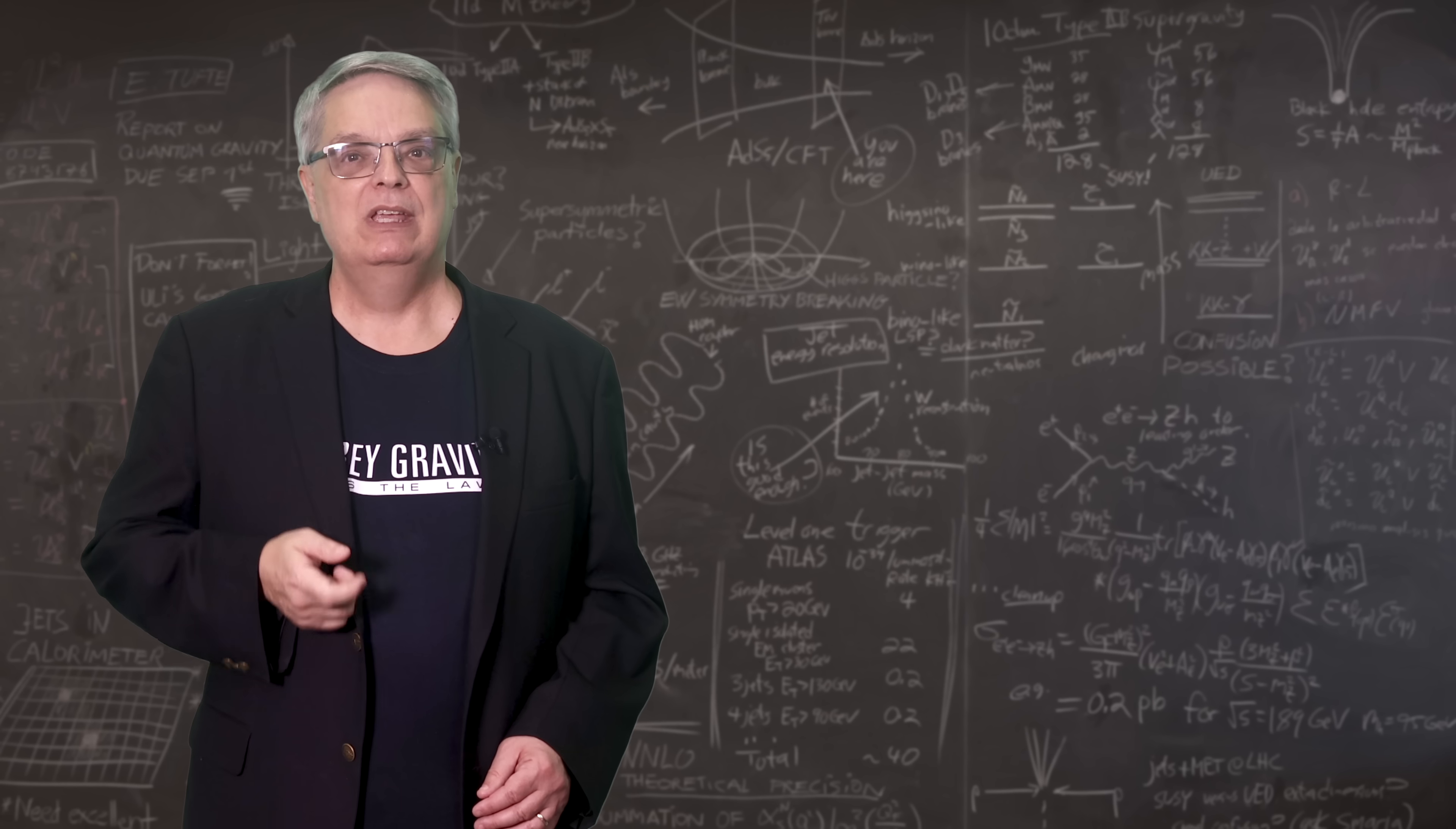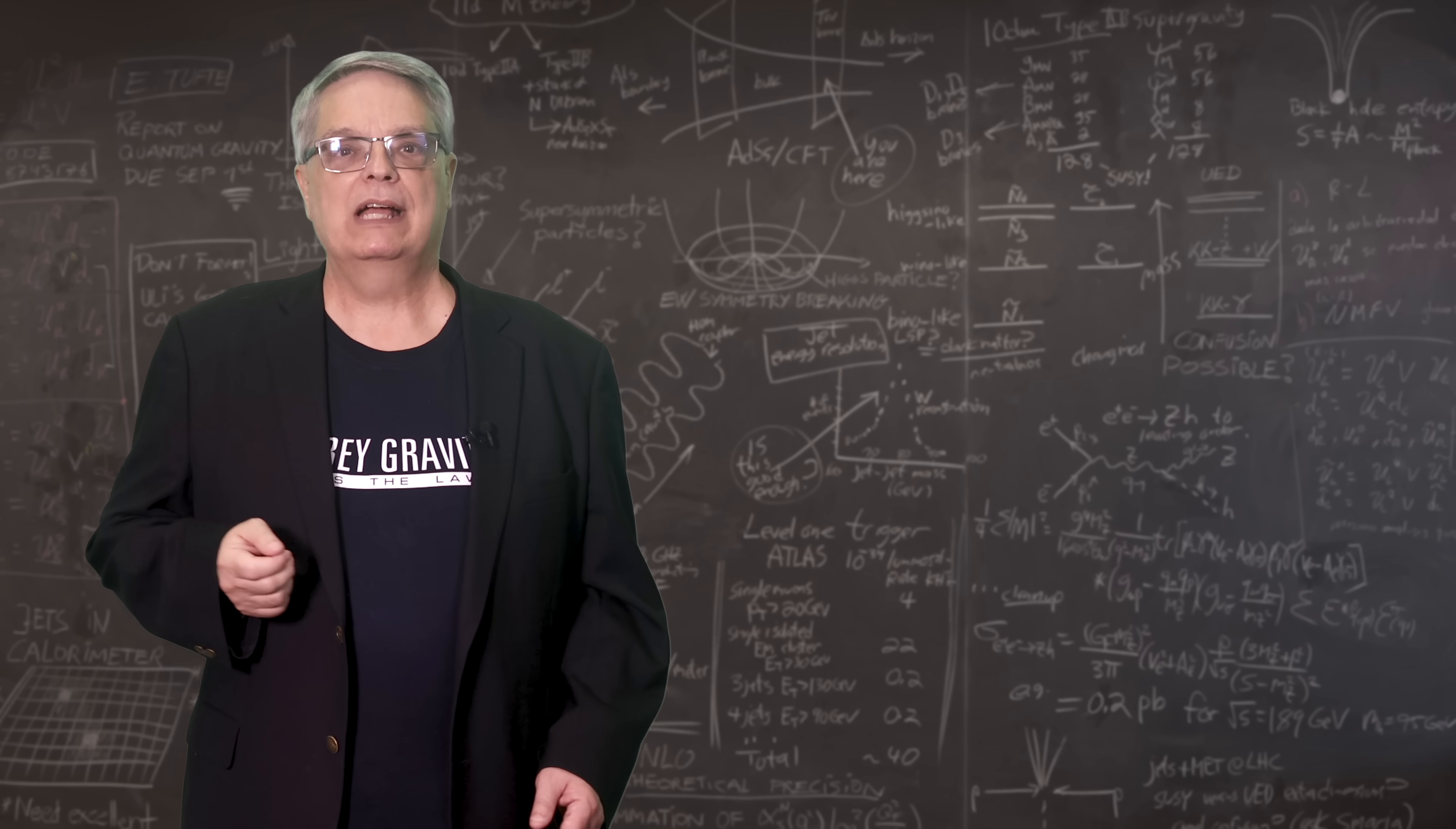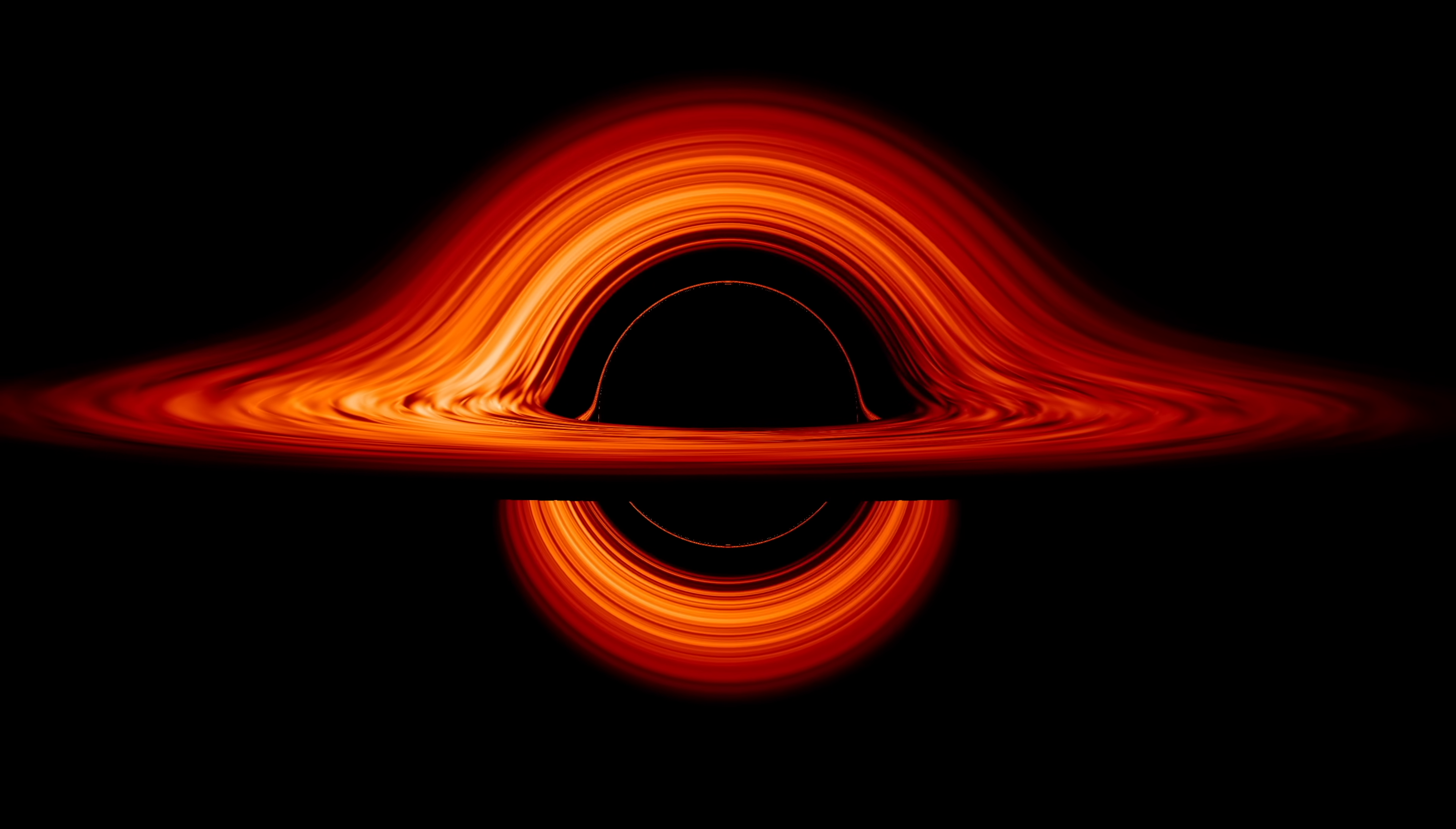Now, there is one caveat. This spaghettification thing happens when you fall inside a black hole with a mass equal to a few stars. But not all black holes are that size. At the center of galaxies there are what are called supermassive black holes with masses equal to millions or even billions of stars.